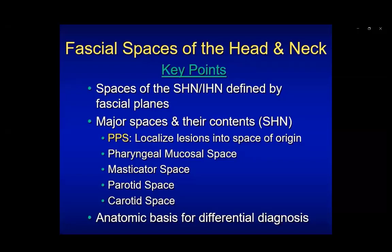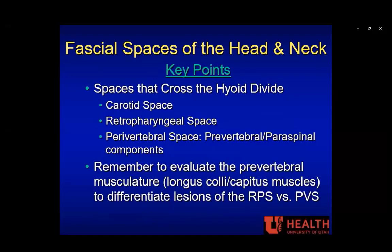In summary, the fascial spaces of the head and neck are really important. These spaces define the different locations of the neck. The parapharyngeal space fat is helpful to determine whether a deep face lesion is in the pharyngeal mucosal, masticator, parotid, or carotid space — this anatomic basis allows a nice construct for differential diagnosis. Spaces that cross the hyoid divide include the carotid, retropharyngeal, and perivertebral spaces. When you have a midline lesion, evaluate the prevertebral musculature — the longus colli and longus capitis — to differentiate retropharyngeal from perivertebral space lesions.